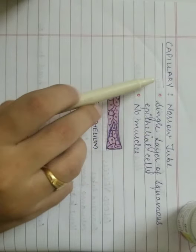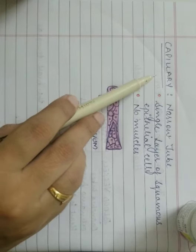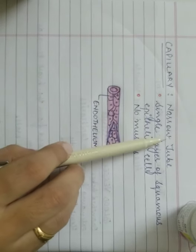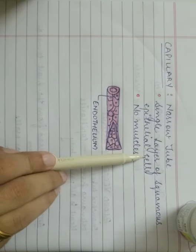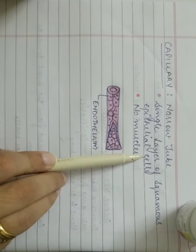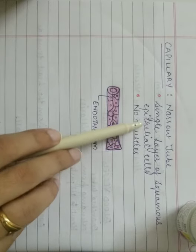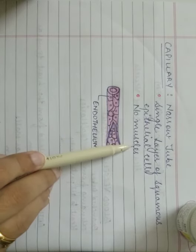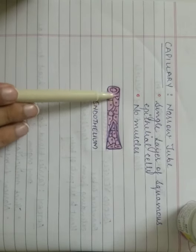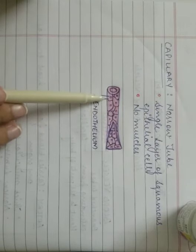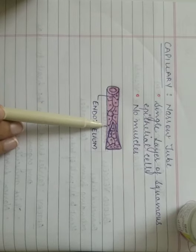The third type of blood vessel is the capillary. It is a narrow tube formed of a single layer of squamous epithelial cells, also known as endothelium. There are no muscles present in the blood capillaries. The structure is formed of only a single layer of epithelial cells — the endothelium.